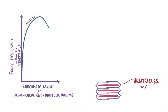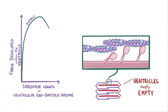Let's imagine that the ventricles are mostly empty, with almost no blood in them. This would mean that there's nothing stretching the muscles in the ventricular wall, so the length of the sarcomeres are really short. At this length, the two Z-discs are pulled close to each other and there's not much room for further contraction. Furthermore, the actin filaments from each side of the sarcomere cross the M-line and overlap.